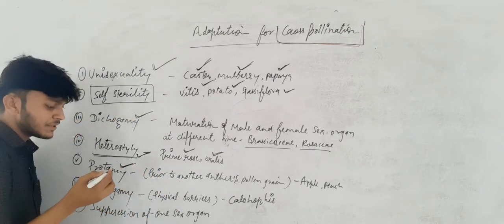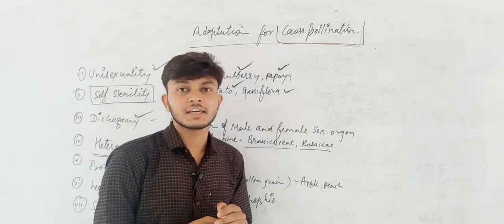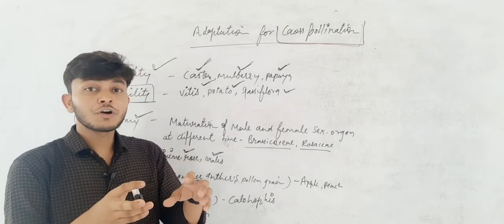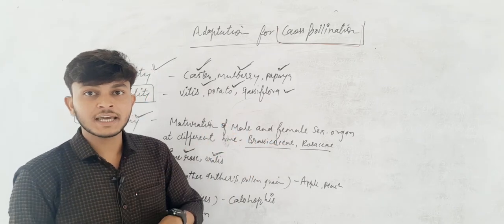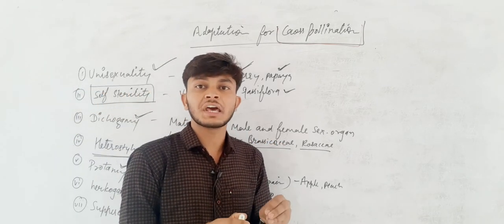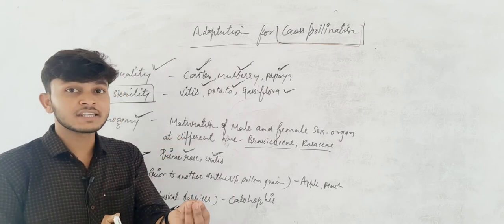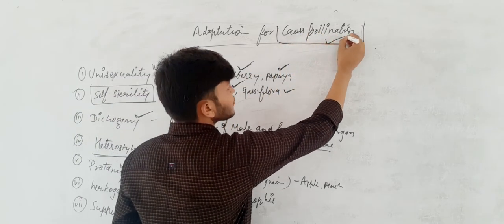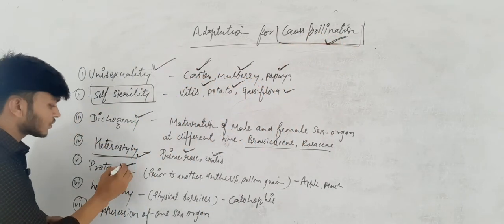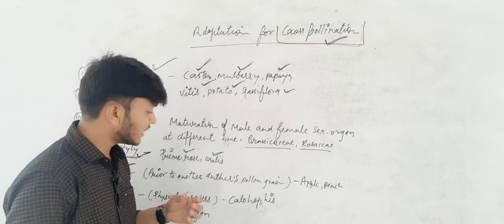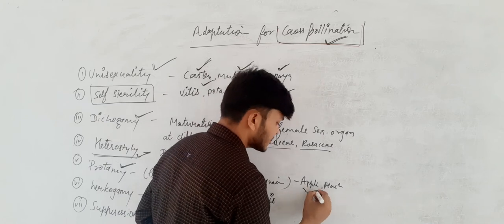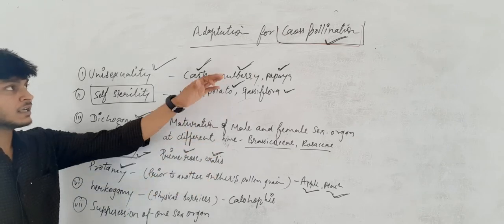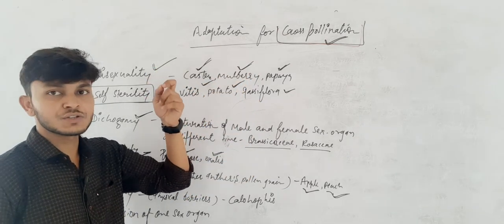Next is proteancy. Proteancy means that in the flower, the female part matures and the pollen is shed in some other plant, giving priority to cross-pollination. This feature is known as proteancy. Examples are apple and peach, which show the properties of proteancy, and because of that, cross-pollination increases the chances of fertilization.